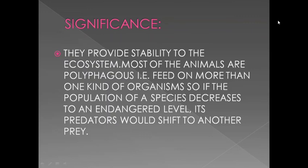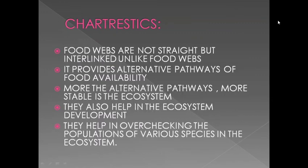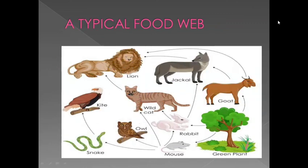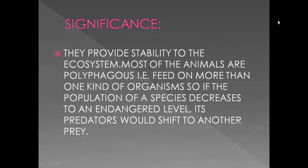Lastly, we will learn the significance of food webs. Food webs provide stability to the ecosystem. Many animals are polyphags, meaning they can eat more than one organism. So if a species decreases to an endangered level, predators will shift to another species. This provides stability to the ecosystem.